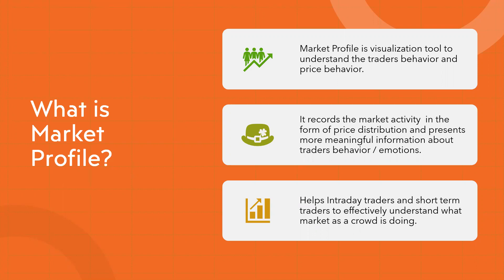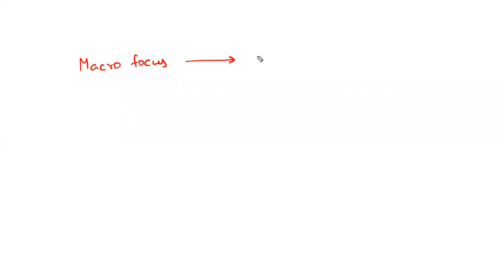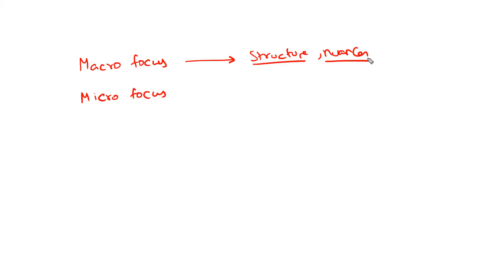There are two ways to use market profile: one is a micro focus and another is a macro focus. The macro focus is what is taught in books — it talks mostly about the profile structure, the shape, and the nuances surrounding those structures. When it comes to intraday perspective, what is more important is the micro focus. Most places you'll find discussion only about structures: B-shaped, D-shaped, Q-shaped structures, and bell-curve shapes.